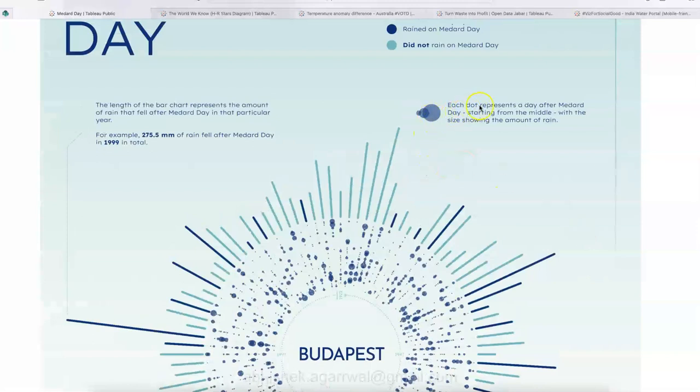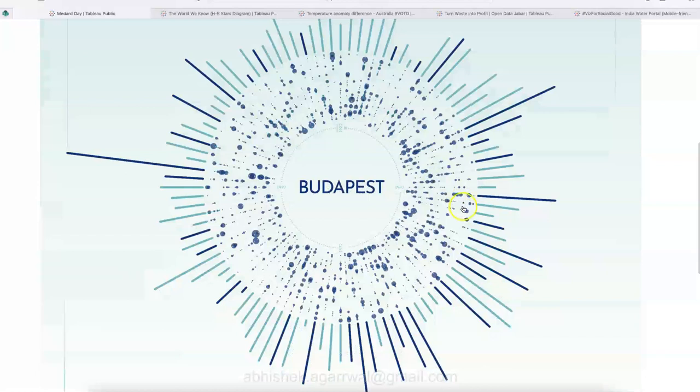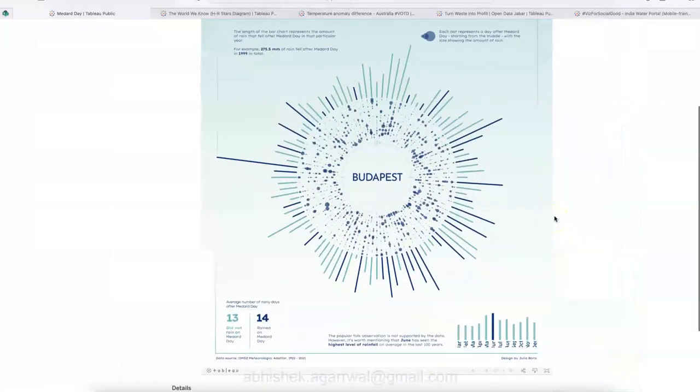And over here, I don't know if you can see, but let me just expand. 1922, 1997, 1972, 1947, that's how the four bifurcation is given, just to give user a high-level idea about what section they are looking at. Also, over here, each dot, which you can see these dots, each dot represent a day after Medard Day, starting from the middle with the size showing the amount of rain. So that basically higher the dot, that means higher the amount of rain.